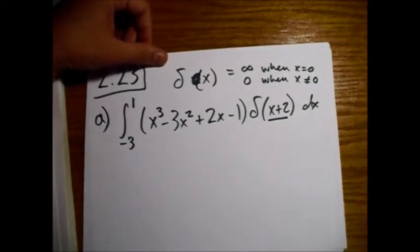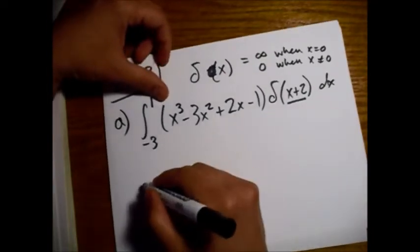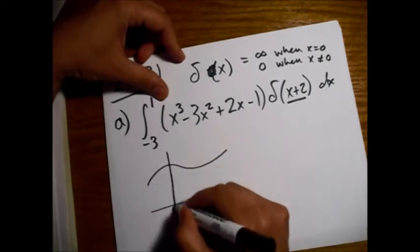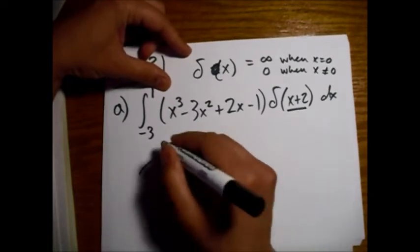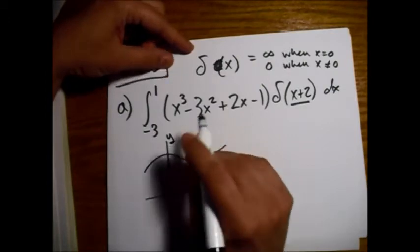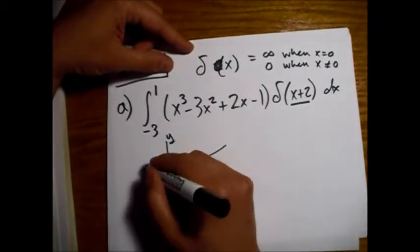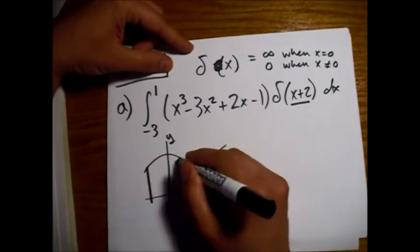So if we're taking the integral, and we're going from minus 3 to 1, say here's minus 3, and here's 1, right?